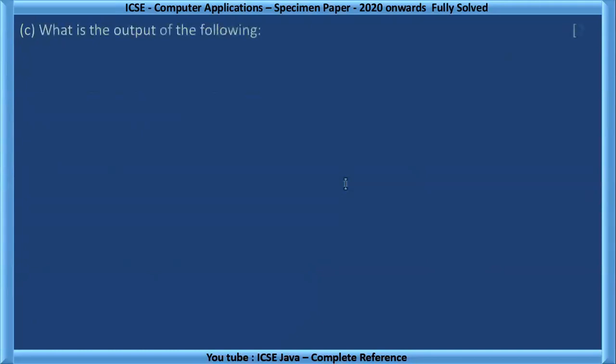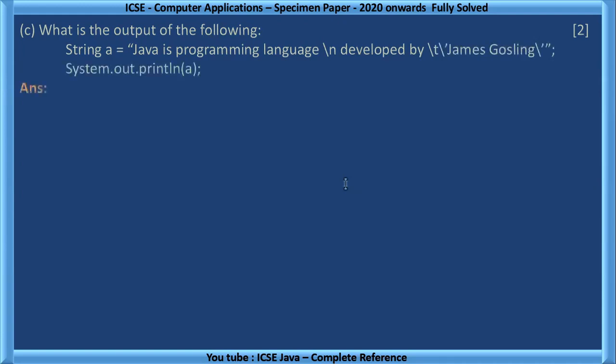Question C. What is the output of the following? String A is equal to Java is a programming language backslash N developed by backslash T backslash single inverted comma James Gosling single inverted comma. These are escape sequences. Backslash N gives a new line. So until Java is programming language, it will print, and there will be one space that we can't see. And then in next line it starts after one space. Developed by and then backslash T that gives single tab, that much space is given, and then James Gosling inside the single quotation.